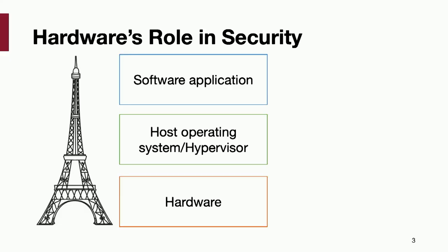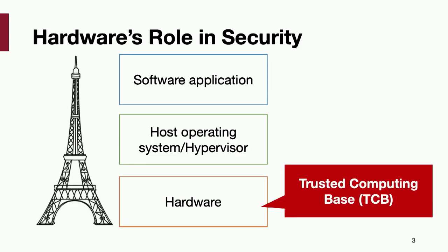With all these privacy-sensitive applications, it's definitely very important to secure our system. This slide will echo what Srini talked about — the trusted computing base. I usually view our system as three layers: on top, software applications such as your browser and bank applications; below that, an operating system or hypervisor; and eventually it runs on hardware. The upper layer needs to trust the layer beneath it, which is why we make hardware part of the trusted computing base.